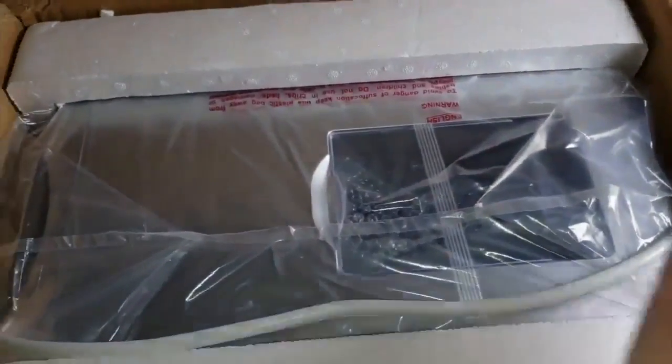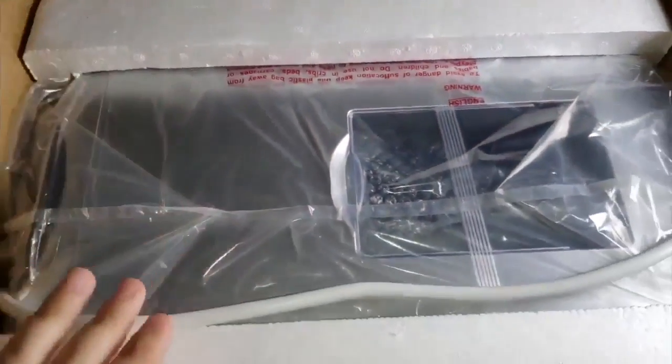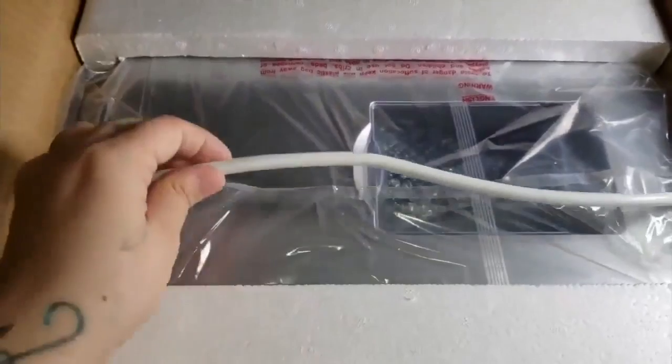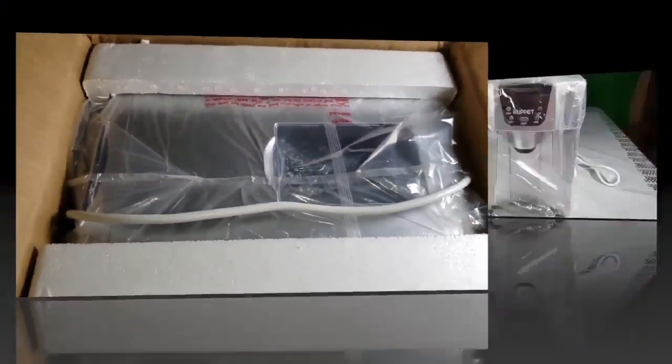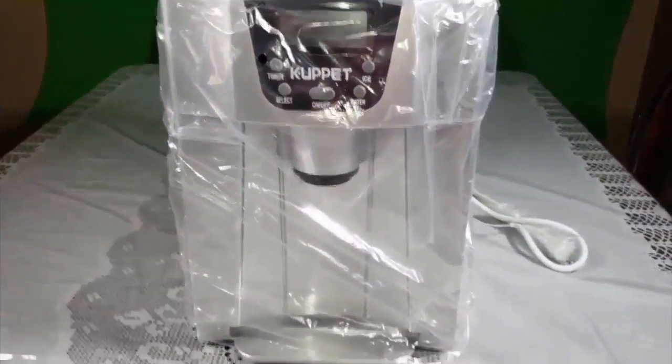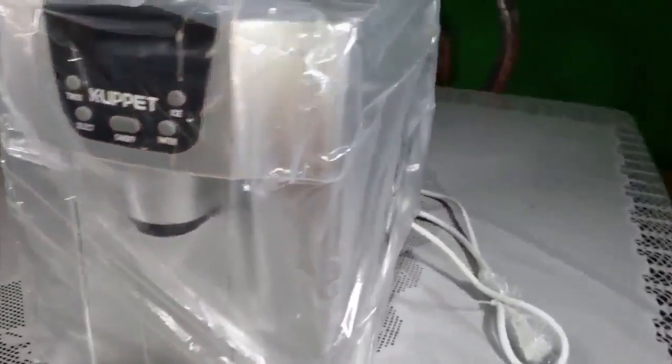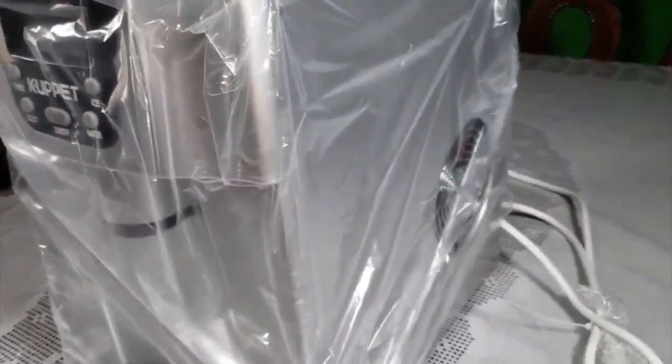Down here in the box is the actual countertop ice maker. It's not very lightweight, but it's not very heavy either. So let's just go ahead and open it up so I can show you what it looks like. Okay, and this is what it looks like. Here's the side of it. There's your fan. I'm just going to remove the plastic wrapping.